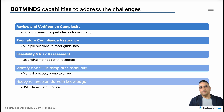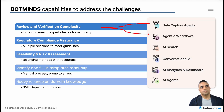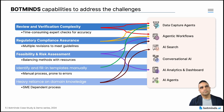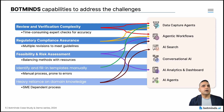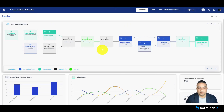I showed you the challenges earlier. Let's take a look at which Botmines capabilities are being utilized to address these challenges. Let me show you a demo now. In this demo, you will notice that there are unstructured documents, the right template needs to be identified from the repository, validation needs to be done based on the business rules specified, and stakeholders need to be notified as part of the overall workflow. Let's get started with the demo.